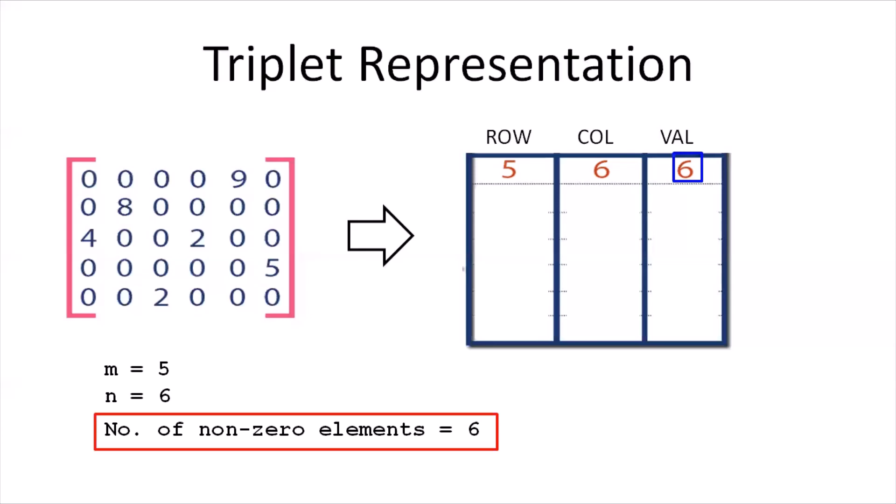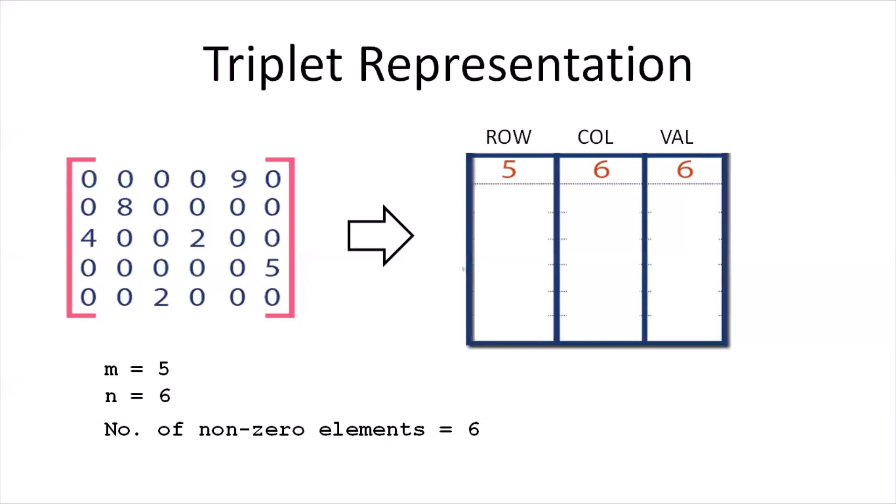In order to do so, we first scan the original matrix row-wise, and whenever we encounter a non-zero element, we record the row number, the column number, and the value of the element as a row in the triplet representation. Here, element nine has row number zero and column number four. Therefore, we enter zero, four, and nine as a row in the triplet representation.